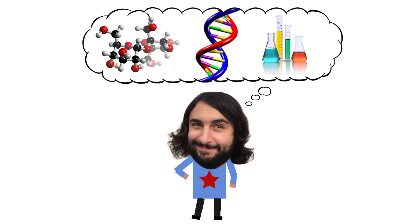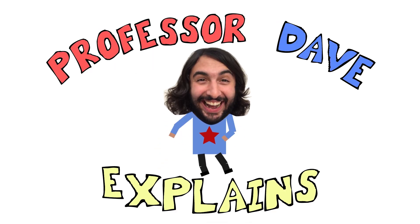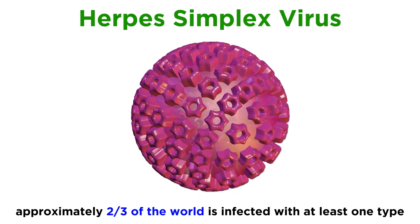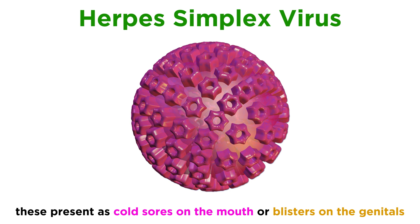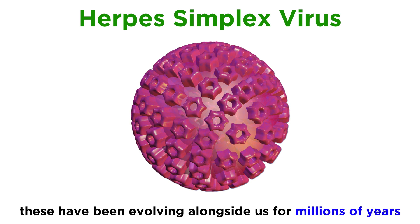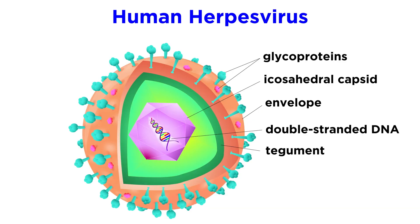Professor Dave Explains. Scientists estimate that about two-thirds of the human population is infected with at least one herpes simplex virus. For the most part, these viruses present as cold sores around the lips or mouth, or blisters on the genitals. According to a 2014 study by scientists at UC San Diego, these viruses have been co-evolving with humans and their ancestors for millions of years. Let's dig into what they're all about.